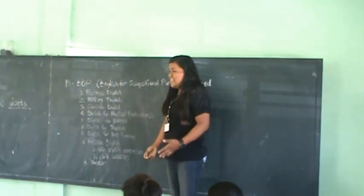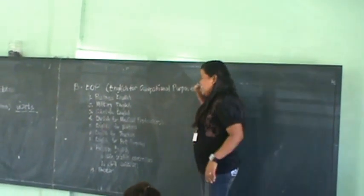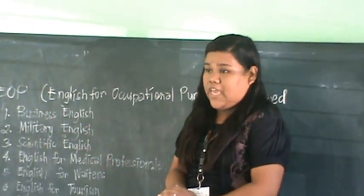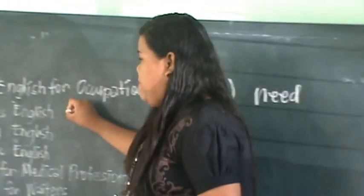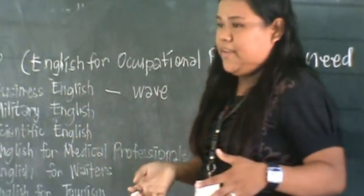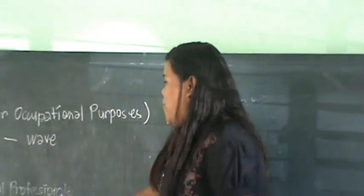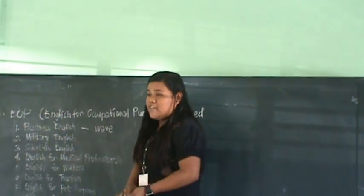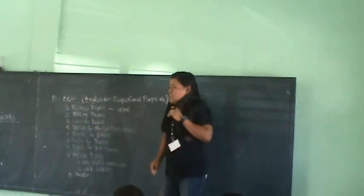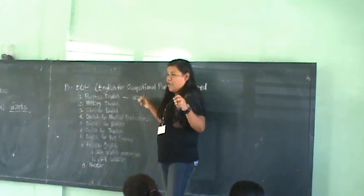We cannot use specific terms if we don't know what they mean. Just like when applying for a job as an undergraduate, you may not know the vocabulary required for that specific position. For example, in business English, the word 'wave' — it could be waves of the sea or waves of hair, but in business English it means skewed left or right, like a graph showing whether a business is increasing or decreasing.